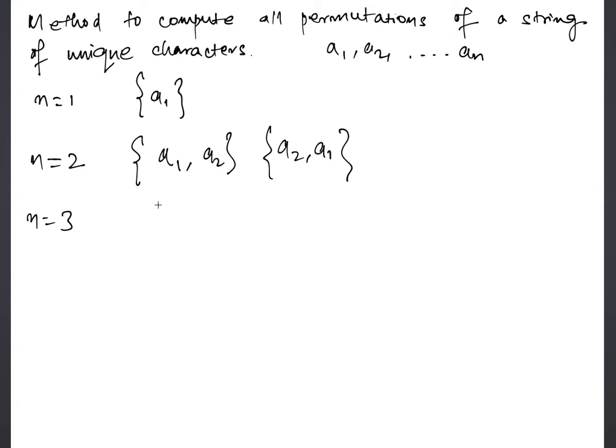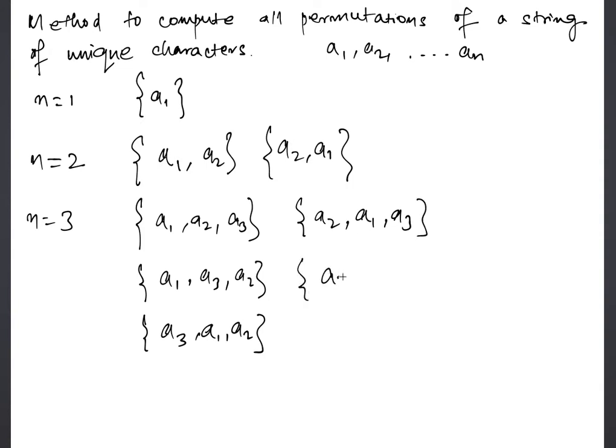From n equals 2, where all can I put a3 so that I get the set of permutations for n equals 3? So intuitively, how about we do something like this: that's a possible permutation. Now say we do that, and similarly for a2, a1.